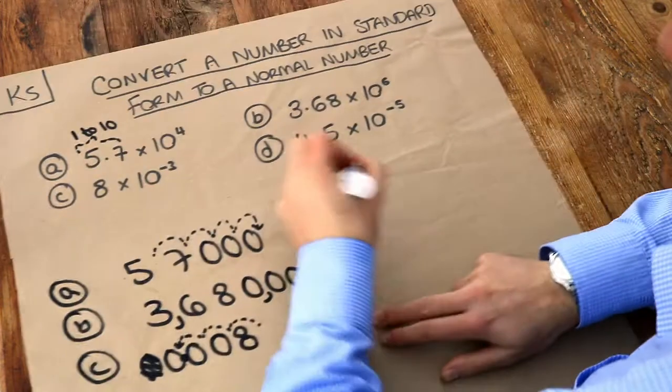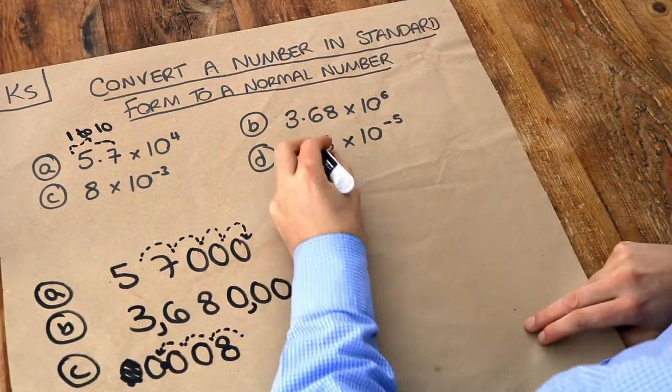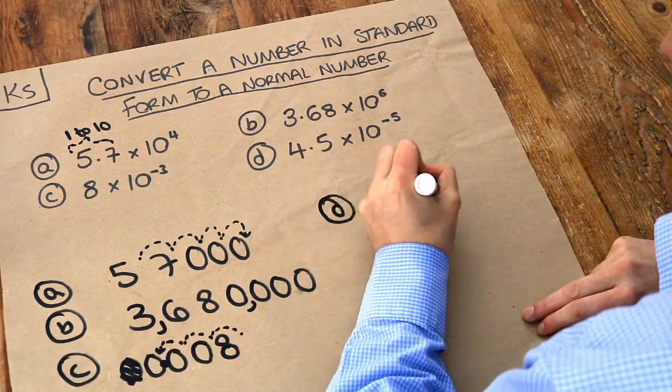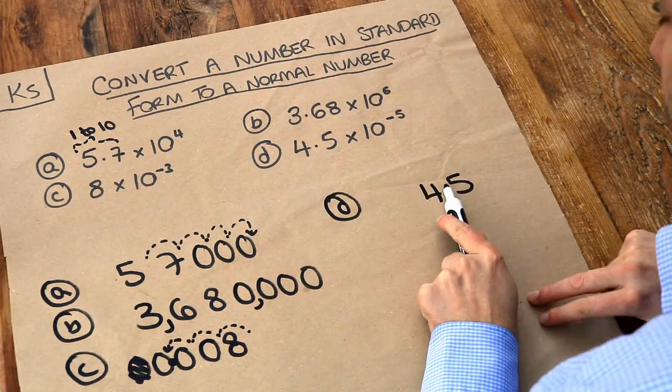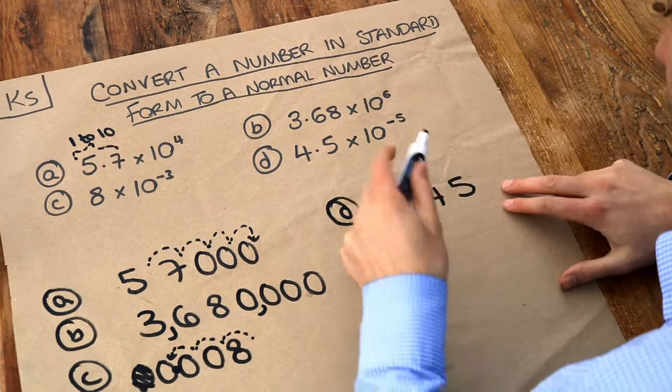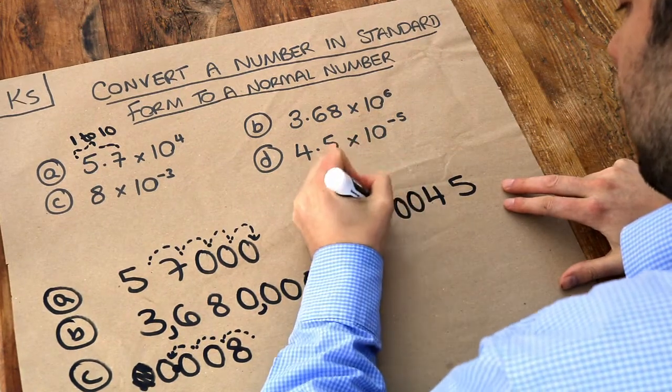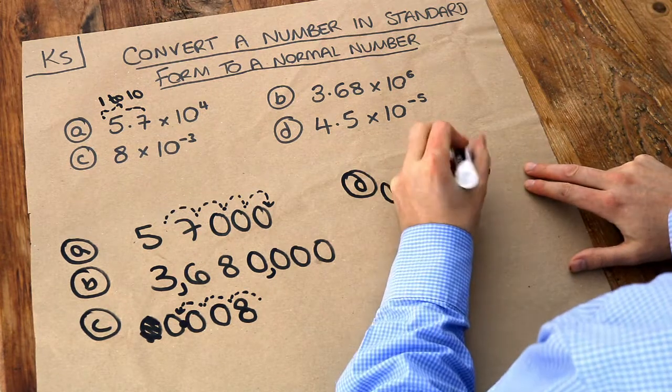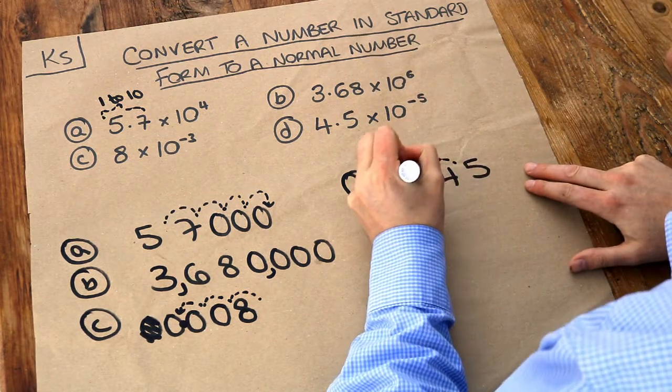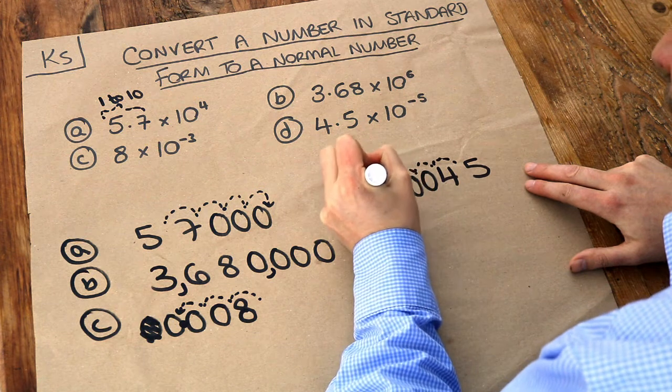And then finally, let's start with this number without the decimal point. And the decimal point is currently between the 4 and the 5. And it needs to move left 5 times. So let's again put some zeros on the front. It doesn't matter if we have too many because we can always just cross out later. So we're going to go 1, 2, 3, 4, 5. So it's there.